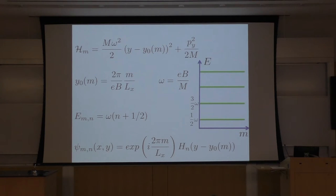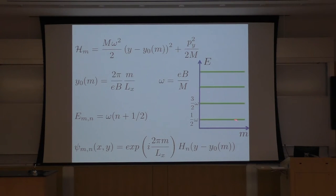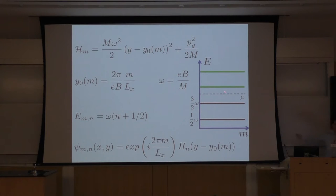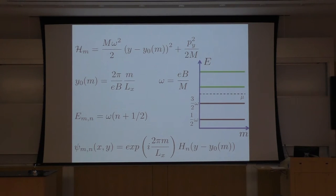The wave function is a plane wave along the x direction times the N-th Hermite function. What if I put chemical potential in this system? I assume the system is periodic in both directions. If I put chemical potential here, all bands below it are occupied, shown with this color, and the system is gapped. Because if I want to excite electrons, I have to take electrons from the lower bands and create them in the higher band, paying a finite energy. At low temperature, I cannot do this, so the system is an insulator.